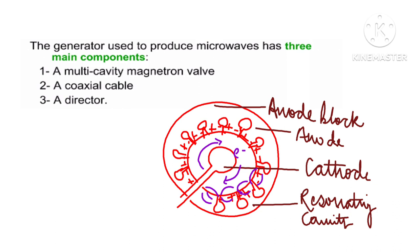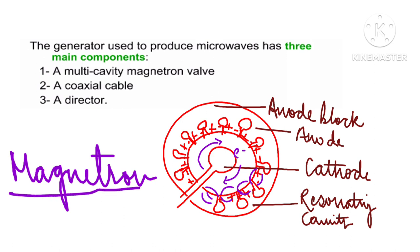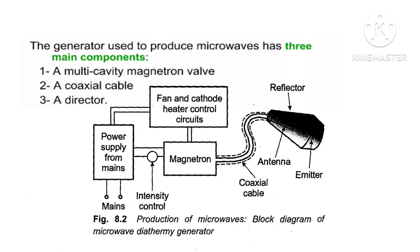When AC electric current passes through the cathode, it heats up and electrons are emitted. This EMF is responsible for producing high-frequency current. These currents are transferred via the coaxial cable to the antenna. The antenna converts electric energy into electromagnetic energy, and with the help of a reflector, the energy is focused and directed to the tissue through the emitter, which also acts as the transducer.